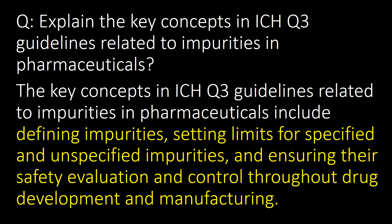Explain the key concepts in ICH Q3 guidelines related to impurities in pharmaceuticals. The key concepts include defining impurities, setting limits for specified and unspecified impurities, and ensuring their safety evaluation and control throughout drug development and manufacturing.